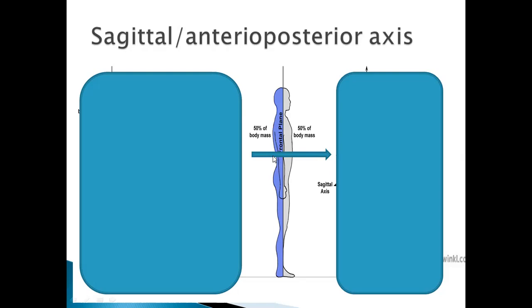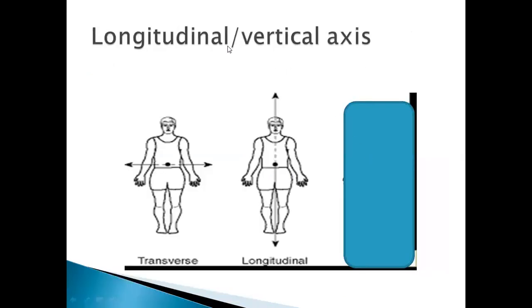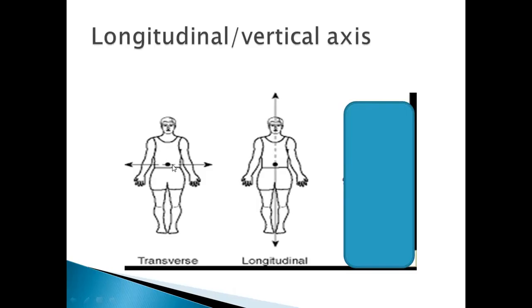The sagittal axis runs anterior to posterior — it is an anterior-posterior line. Next, the longitudinal or vertical axis. Your transverse plane is the plane which divides your body into upper half and lower half. The transverse plane corresponds to the longitudinal axis — a vertical line running through the body. If the plane is here, a line will go through it at a 90-degree angle. So this is the longitudinal axis.